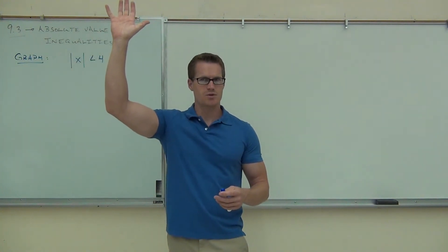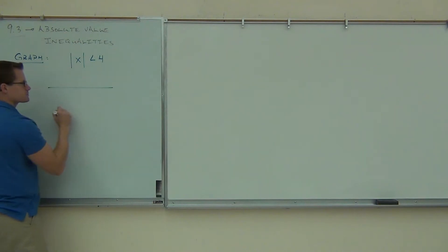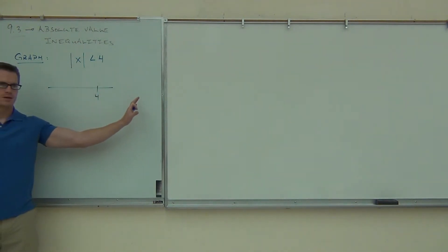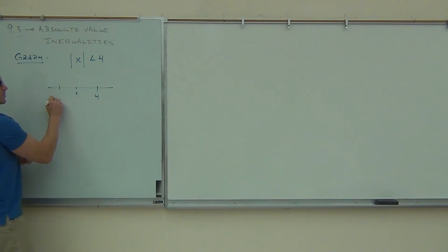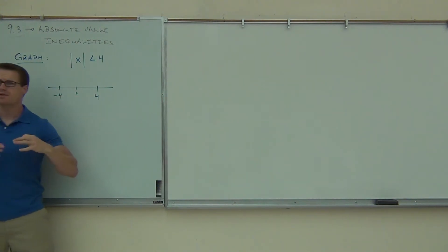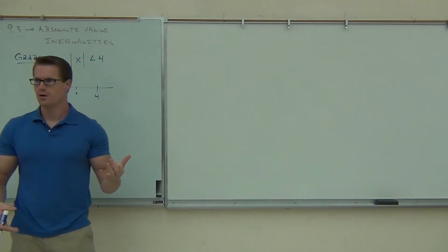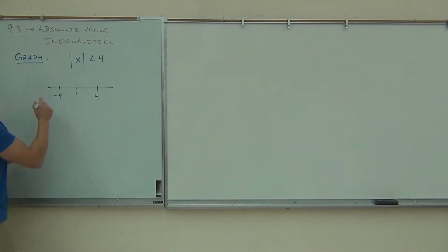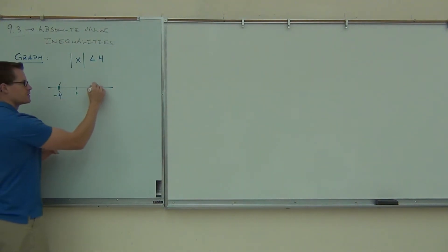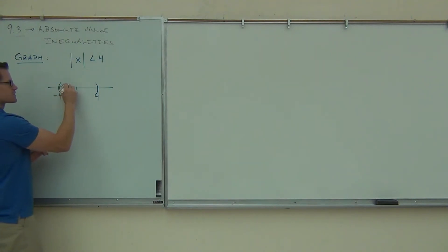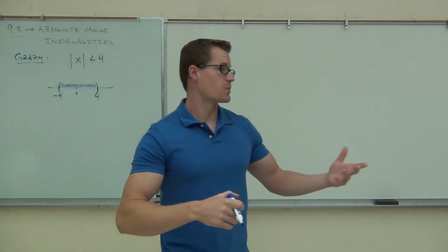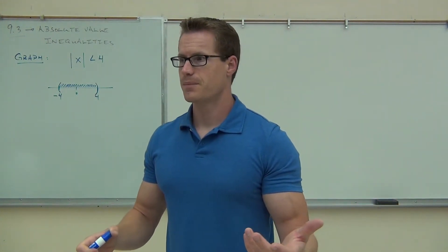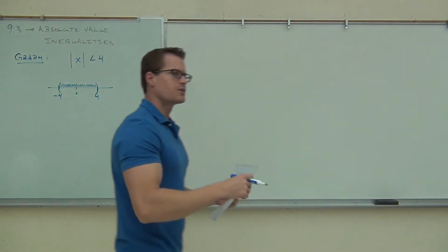So if we do this on a number line, I can't plug in anything greater than four, because that would be greater than four in absolute value. I also can't plug in anything less than or equal to negative four, because the absolute value changes it to a positive, which becomes bigger than four. So when I graph this, I'm going to use parentheses to signify open. We're talking about this range — anything between negative four and four, but not inclusive. It's not inclusive because there's no equal sign.